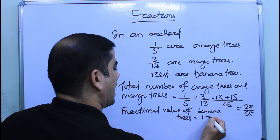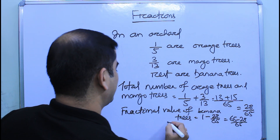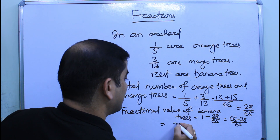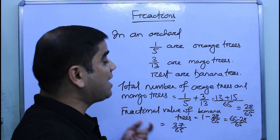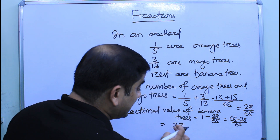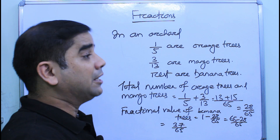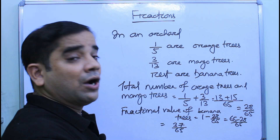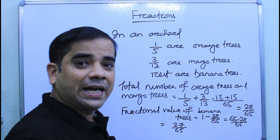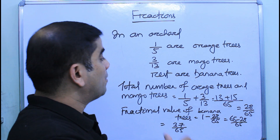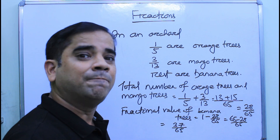The remaining trees are banana trees. To find the fractional value of the banana trees, we subtract from 1: 1 minus 28 by 65 equals 65 minus 28 by 65, which gives 37 by 65. So 37 by 65 is the fractional value of banana trees — meaning if we divide the total trees into 65 parts, 37 parts are banana trees. As per the question, those 37 by 65 parts correspond to 148 trees.